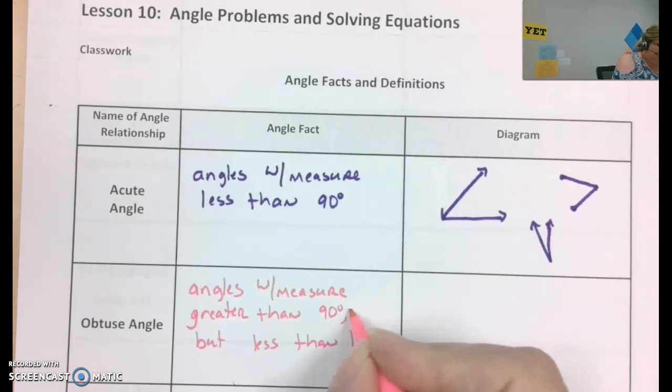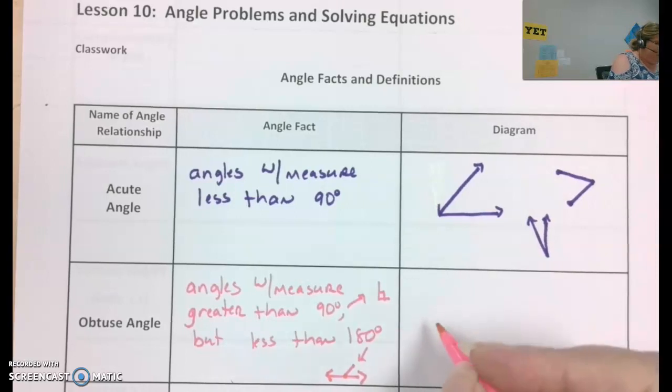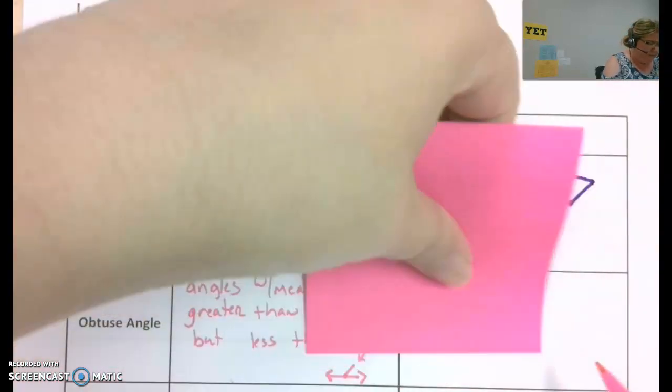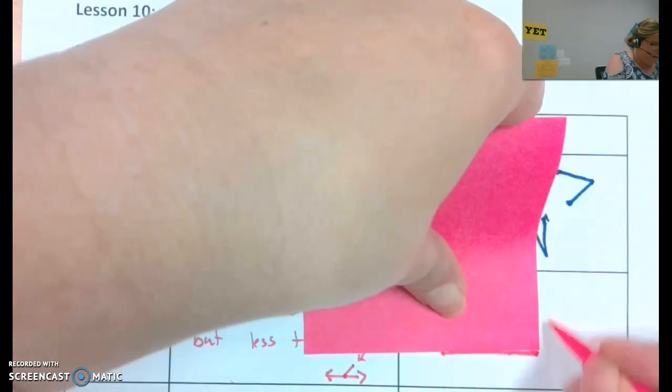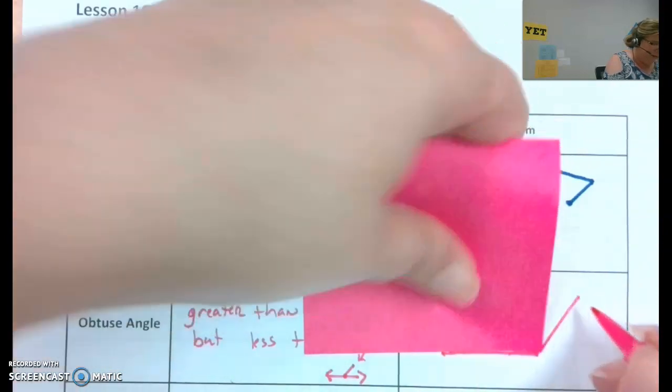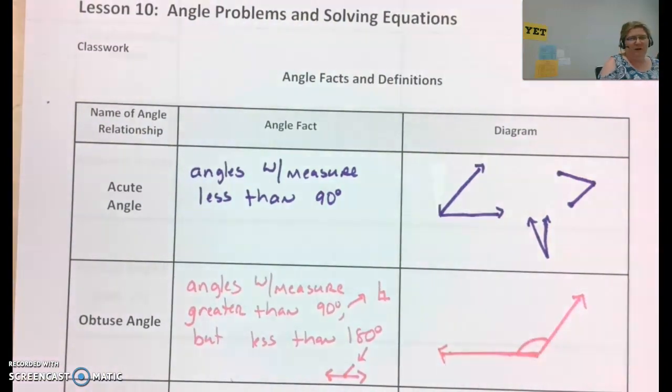So again, a 90 degree angle is a right angle. 180 degrees is a straight line. The two angles that make up a straight line. Okay, so an obtuse angle. I could do this. Then it's going to be more than 90, so like that. This is an excellent example of an obtuse angle.